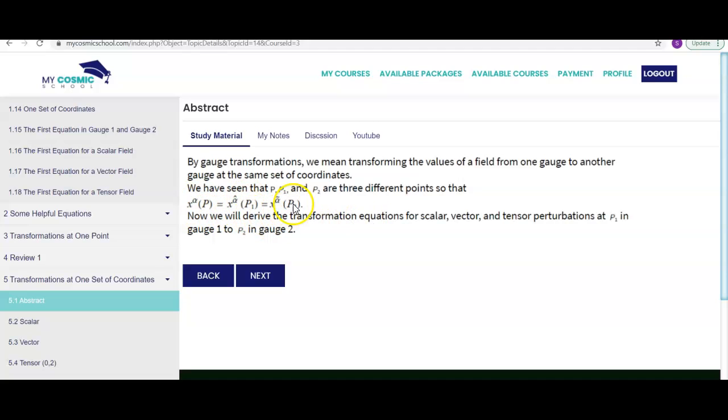So when we say P1, these are the two perturbed gauges. Carat gauge gauge 1 and tilde gauge gauge 2. These are two perturbed gauges. We are interested in finding the relationship between the perturbation quantity in gauge 1 and the perturbation quantity in gauge 2.